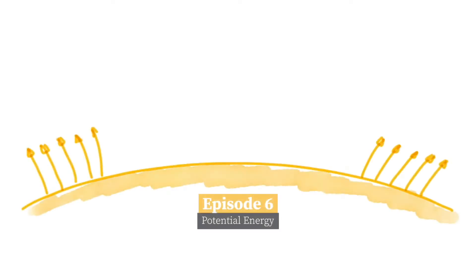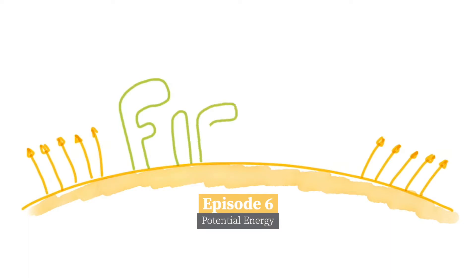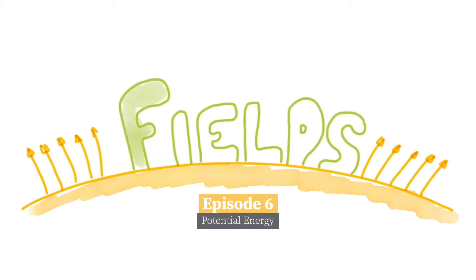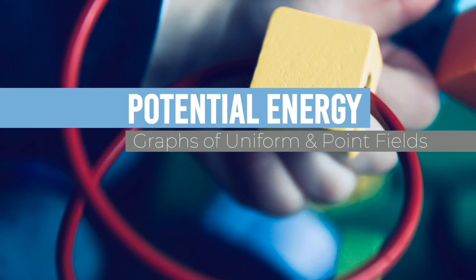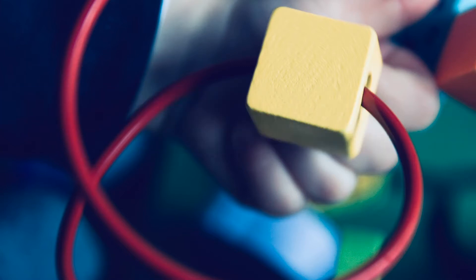Welcome to the sixth installment of this video series on fields. Today we're going to talk about potential energy. In this particular video, it's quite a detailed video, but we're going to go through graphs of uniform and point fields, the idea of a potential well and how it relates to orbital motion, and compare a uniform and monopole field in terms of potential energy for a gravitational example.